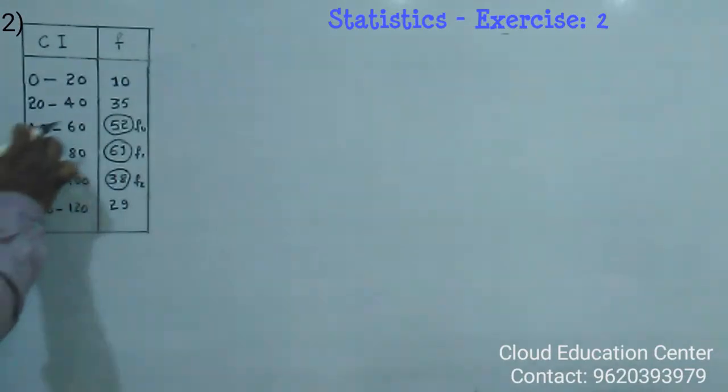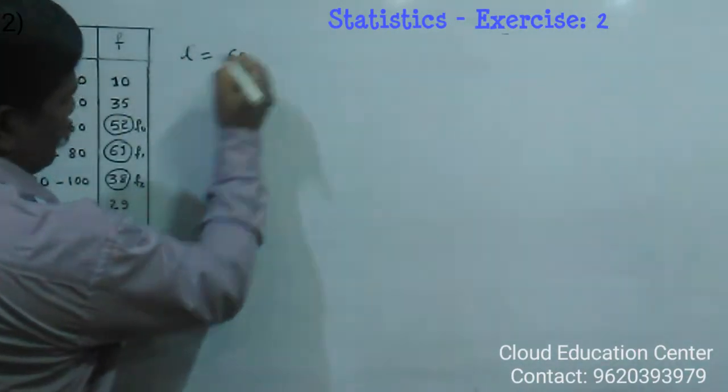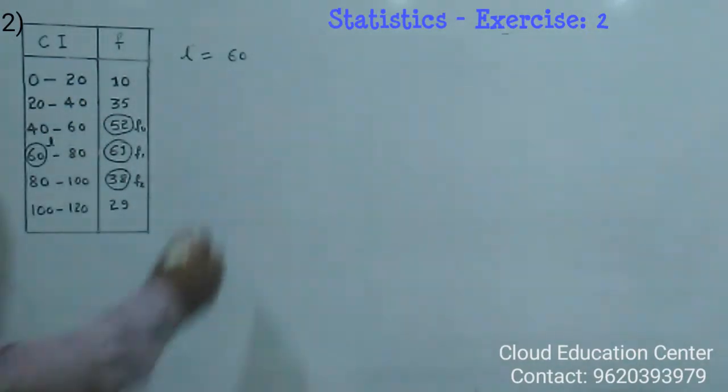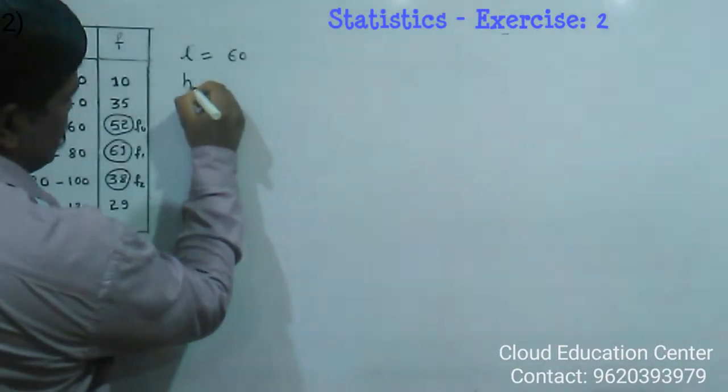So this is called the modal class. The lower limit is 60 and the width of the class interval is 20, that is H equals 20.